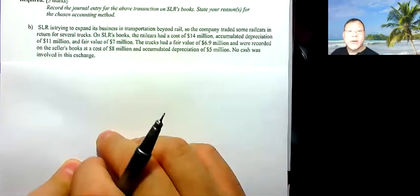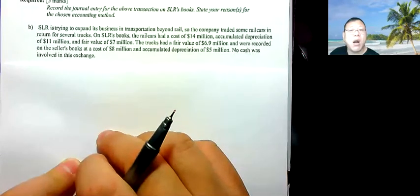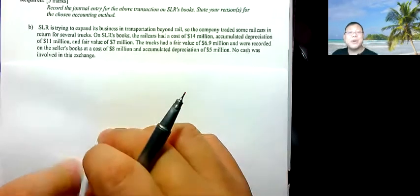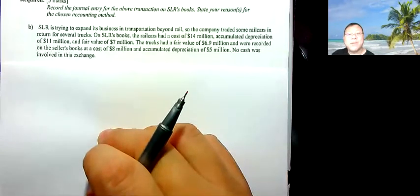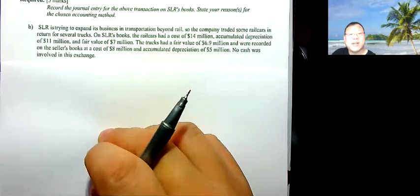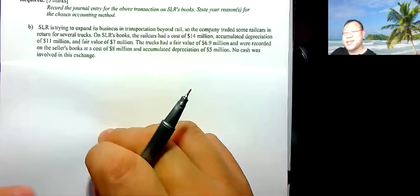SLR is trying to expand its business in transportation beyond rail. The company traded some rail cars in return for several trucks. On SLR's books, the rail cars had a cost of $40 million, cumulative depreciation of $11 million, and a fair value of $7 million. The trucks had a fair value of $6.9 million and were recorded on the seller's books at a cost of $8 million with cumulative depreciation of $5 million. No cash was involved in this exchange.